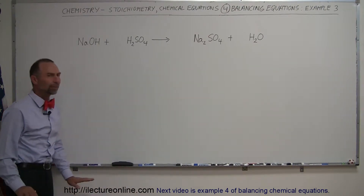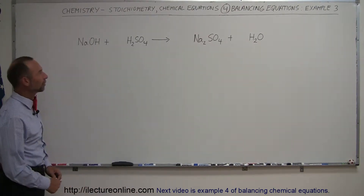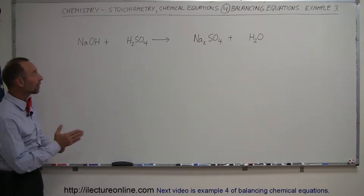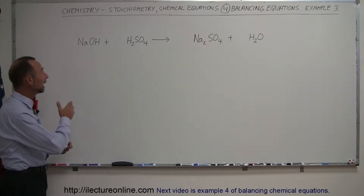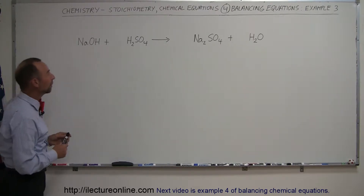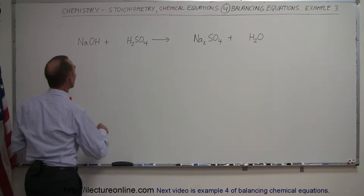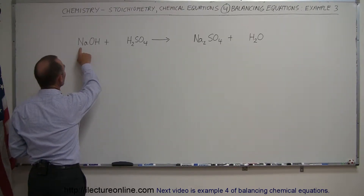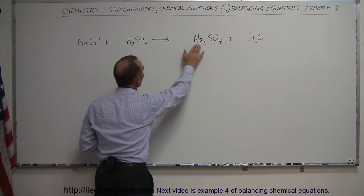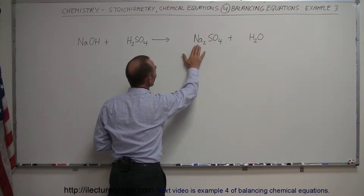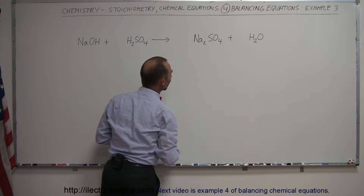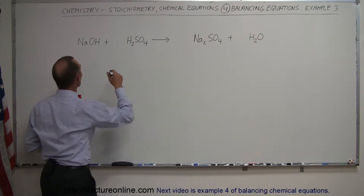This is probably not balanced, so we have to find a way to balance it. What you want to do is find one element on the left side and one element on the right side that only appears once in any one molecule. So here we have sodium that only appears once — let's start with sodium.